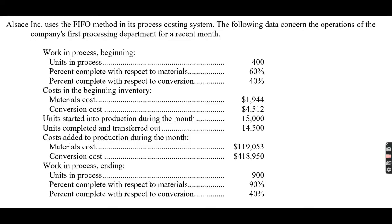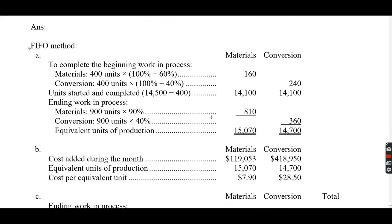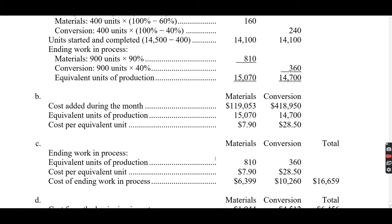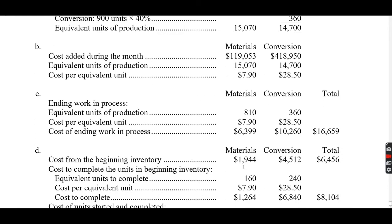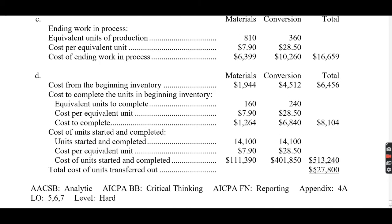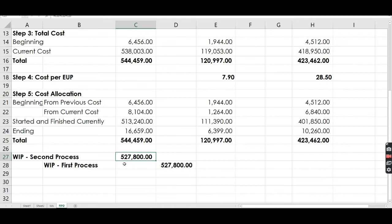The summary solution is also available here. The total is 527,800. That's the summary for our FIFO recap.